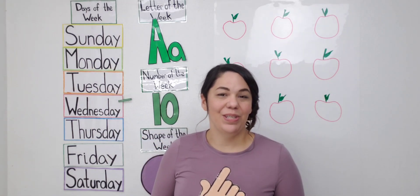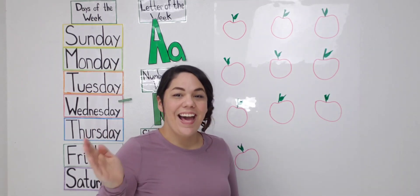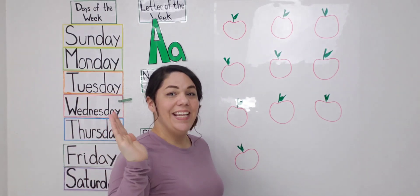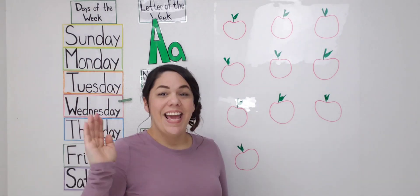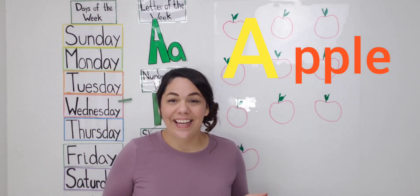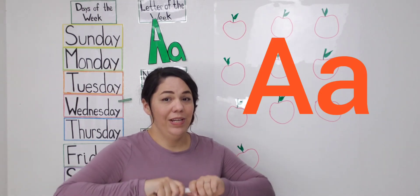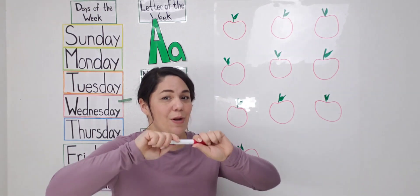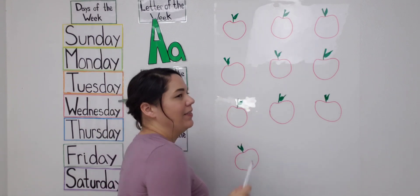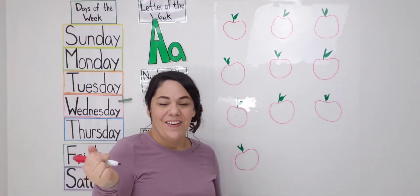And now it's time to count our apples. A, A, apples. Every letter makes a sound. A says apple. A says ah. And apple starts with the letter A. Good job. Okay friends, so we need our handy dandy marker, and we're going to write our numbers inside each of these apples. Are you ready? Great.